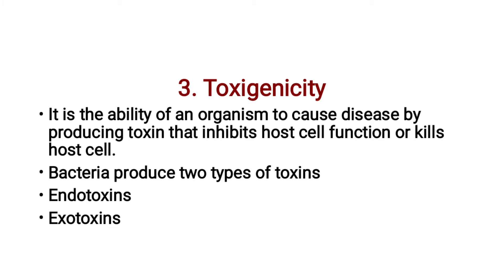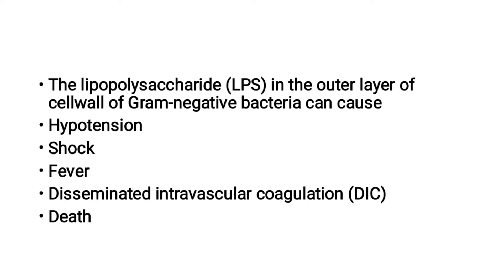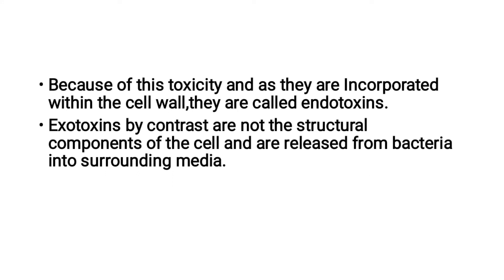The third virulence factor is Toxigenicity — the ability of an organism to cause disease by producing toxins that inhibit host cell function or kill host cells. Bacteria produce mainly two types of toxins: endotoxins and exotoxins. The lipopolysaccharide in the outer layer of the cell wall of gram-negative bacteria can cause hypotension, shock, fever, disseminated intravascular coagulation, and death; because they are incorporated within the cell wall, they are called endotoxins. Exotoxins, by contrast, are not structural components of the cell and are released from bacteria into surrounding media.